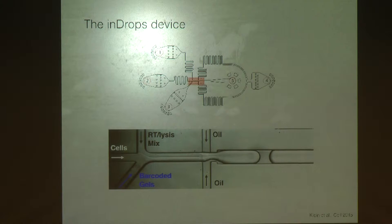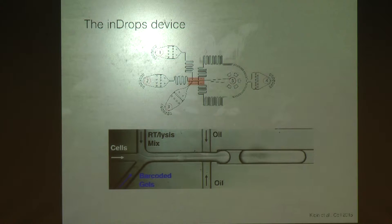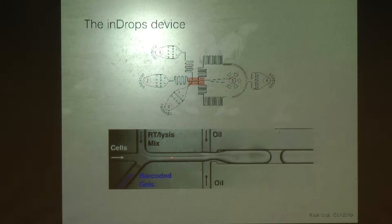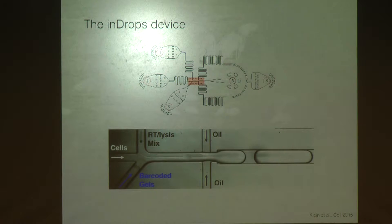Zooming in on the fluidic junction: we have three reagents we want to mix inside the droplets — a suspension of single cells, an RT mix with enzyme and detergent, and barcoded hydrogel spheres. A lot of care went into the design of this device to allow a very regular hydrodynamic release of these barcoded gels into the droplet stream. This is probably the greatest strength of the inDrops platform: almost every single droplet that gets formed has one of these gels inside it, meaning every cell that enters the device can actually be captured. We have a very high capture rate for this method.